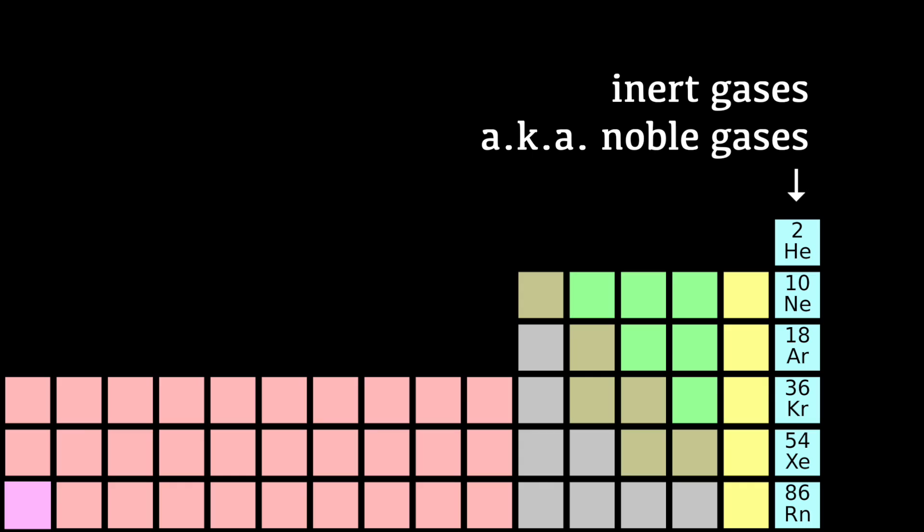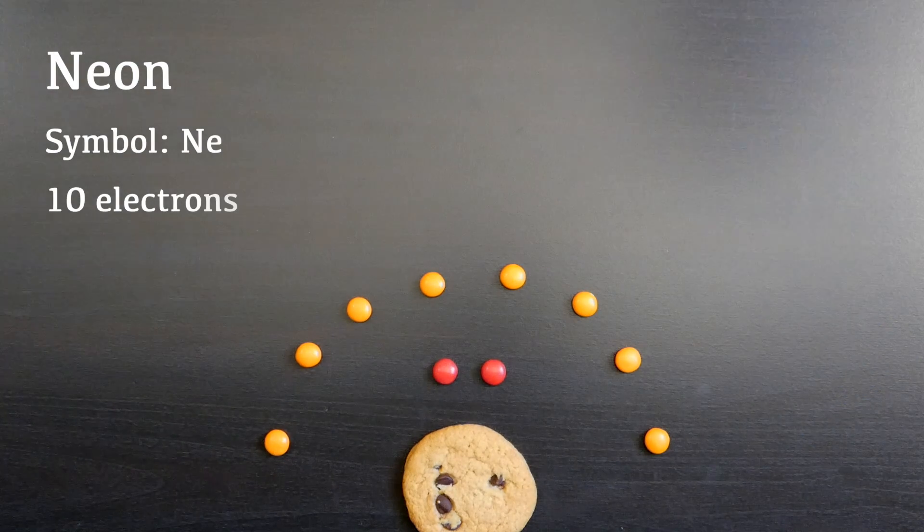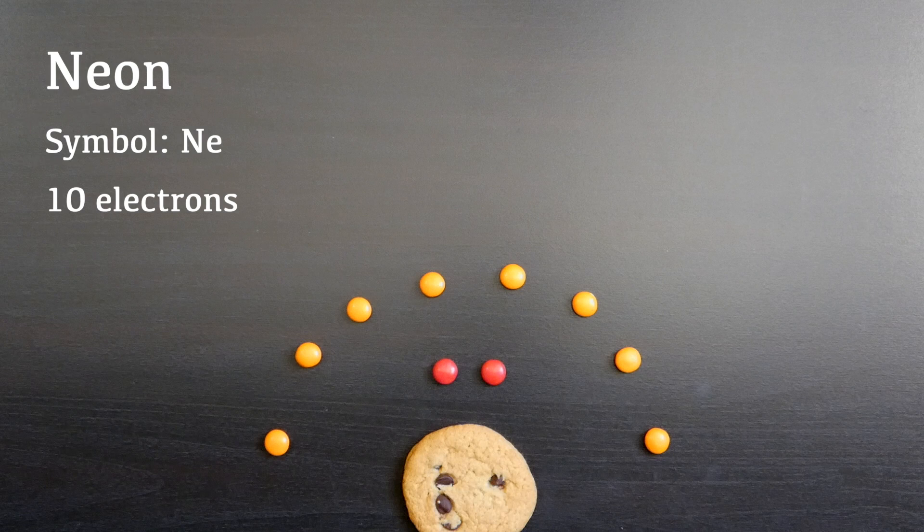Finally, we come to another inert gas, an element like helium that is stable by default. This one is called neon, as in neon signs. It has a full outer shell containing eight electrons, and it is very difficult to take any of those electrons away, or insert any more.